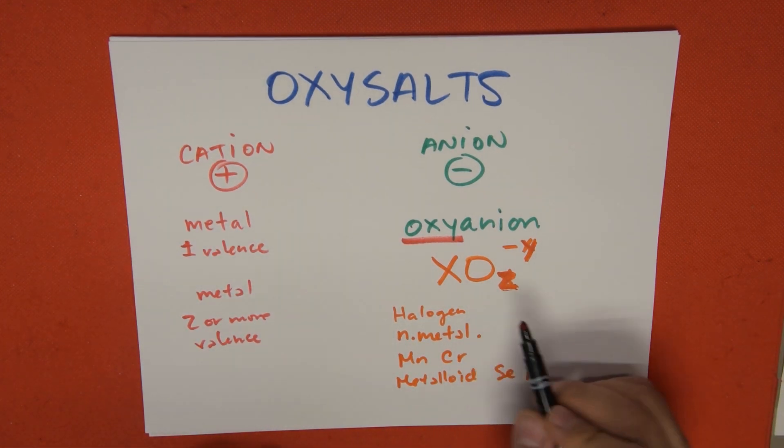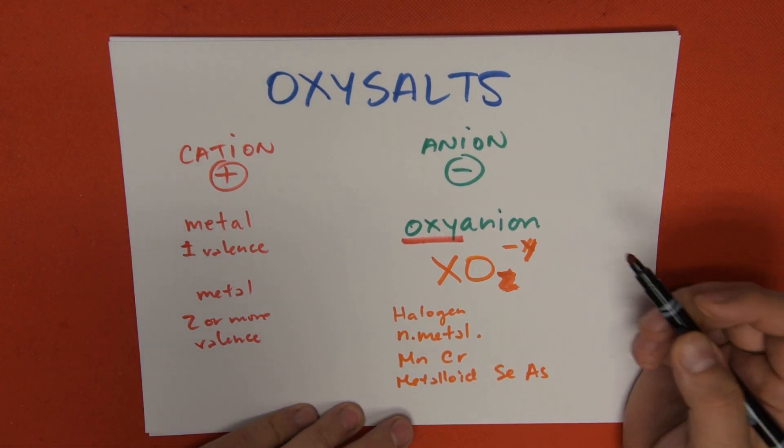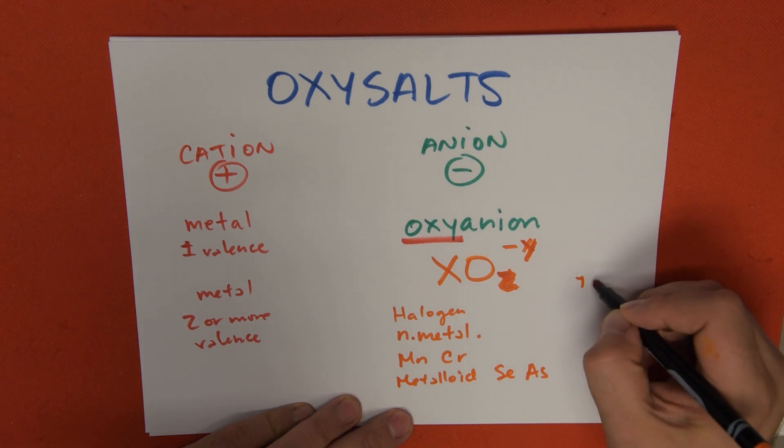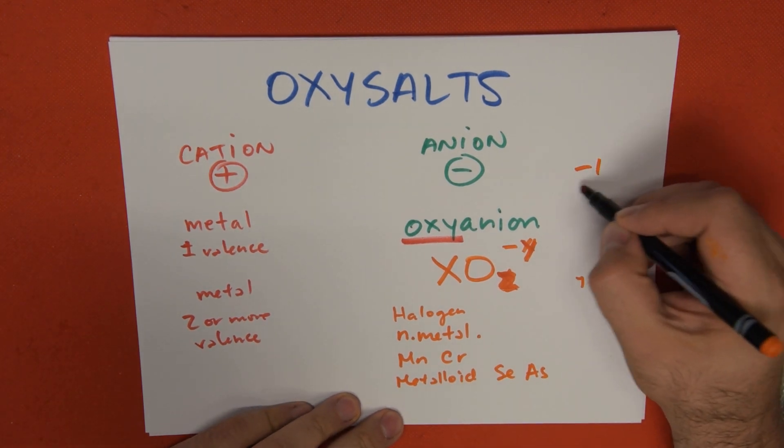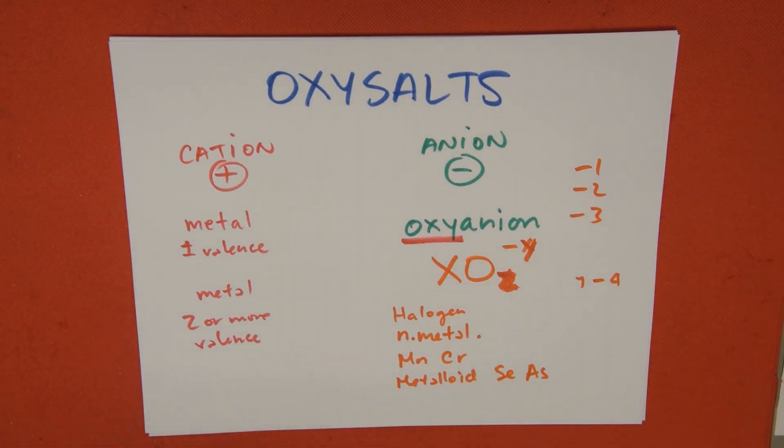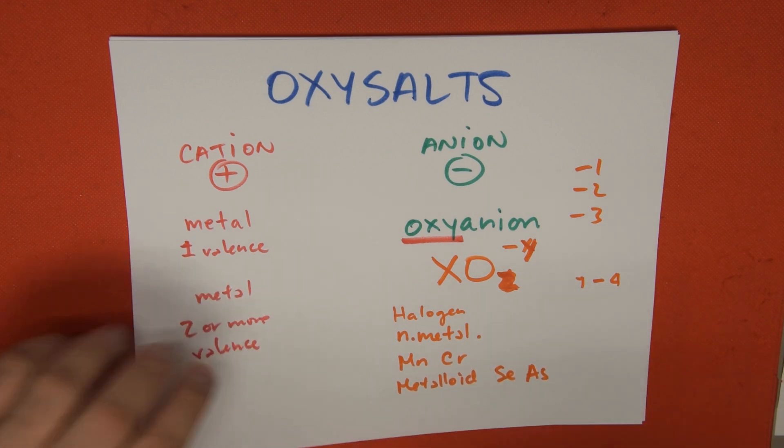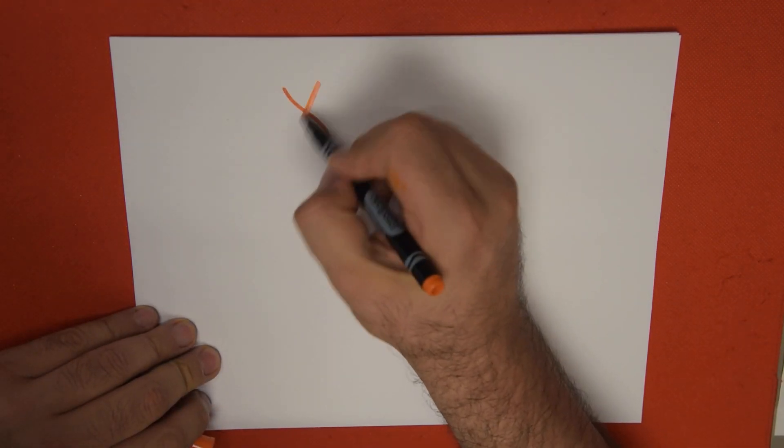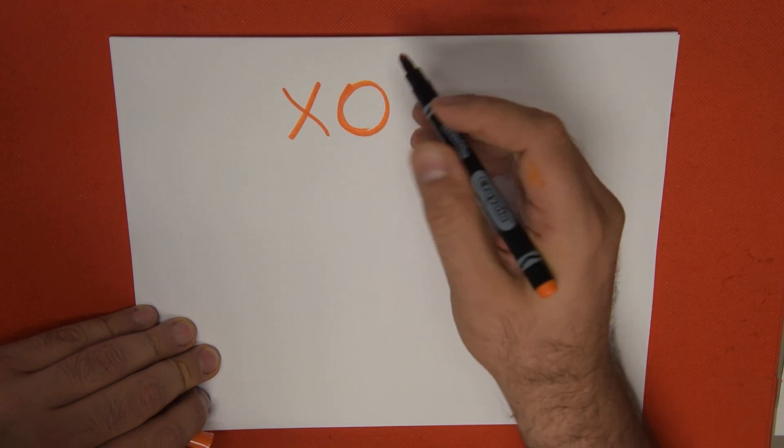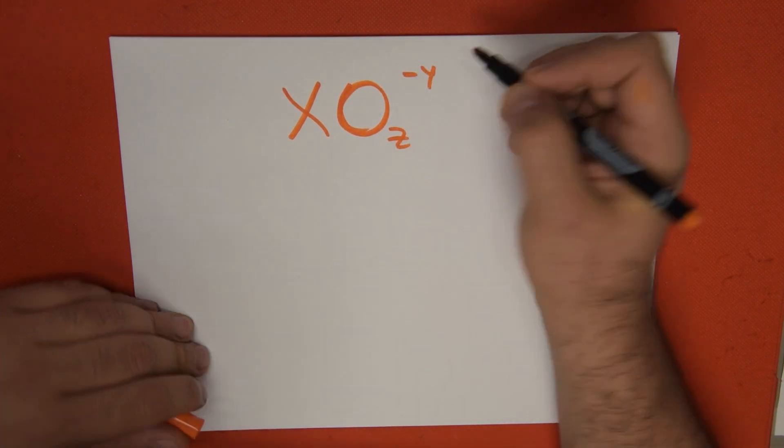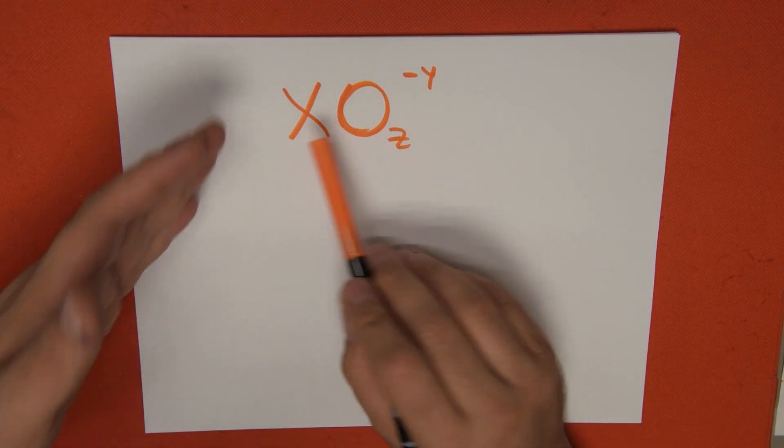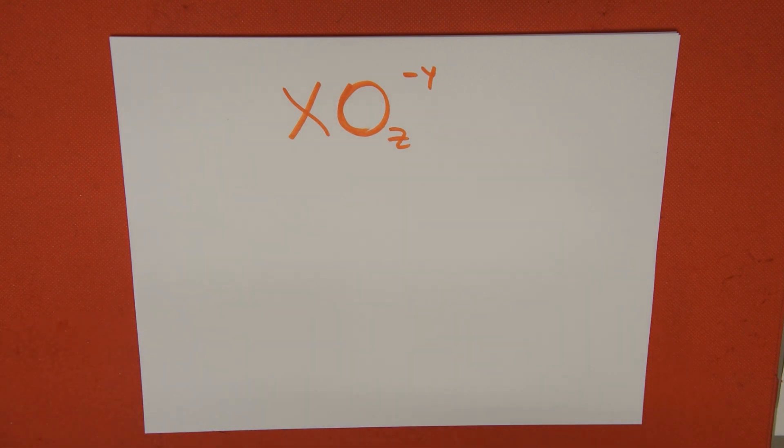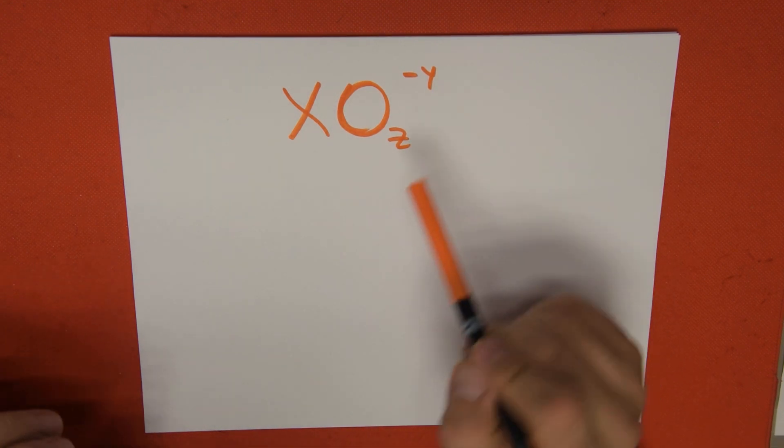They always have oxygen, and letter Z can be a number from 1 all the way up to 4, and Y can be a charge of negative 1, negative 2, negative 3. An oxyanion is a polyatomic ion, that means it's made out of different amounts of atoms that are usually mixed, and it has a negative charge.